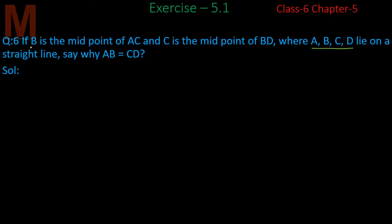We draw the straight line. B is the midpoint of AC, so we place A and C on the line with B in between. Then C is also the midpoint of BD, so D is further along the line beyond C. All points are on the same line, so we extend it to include D.